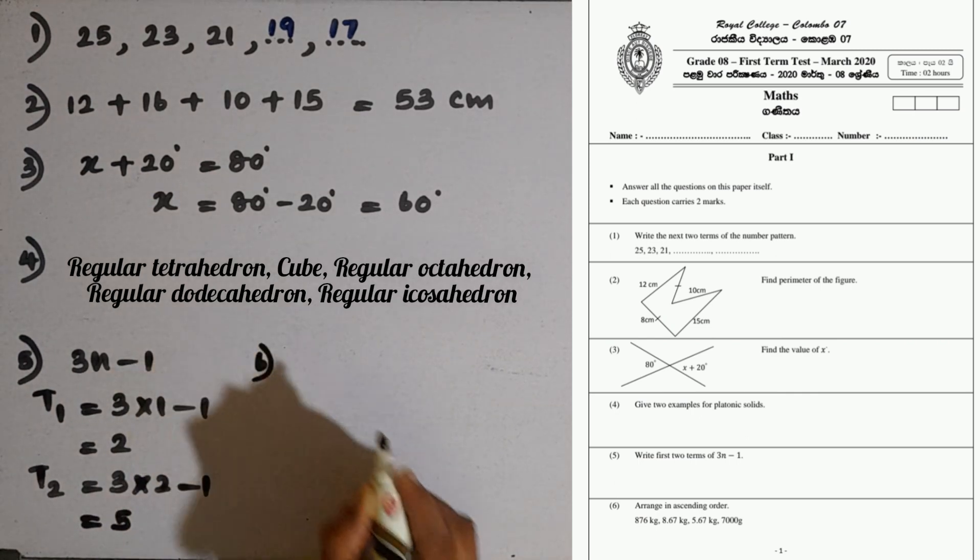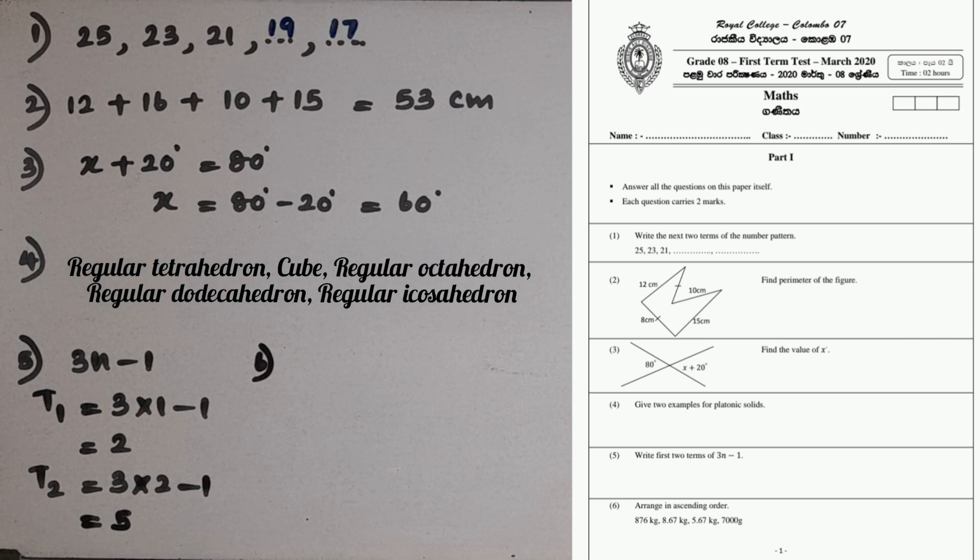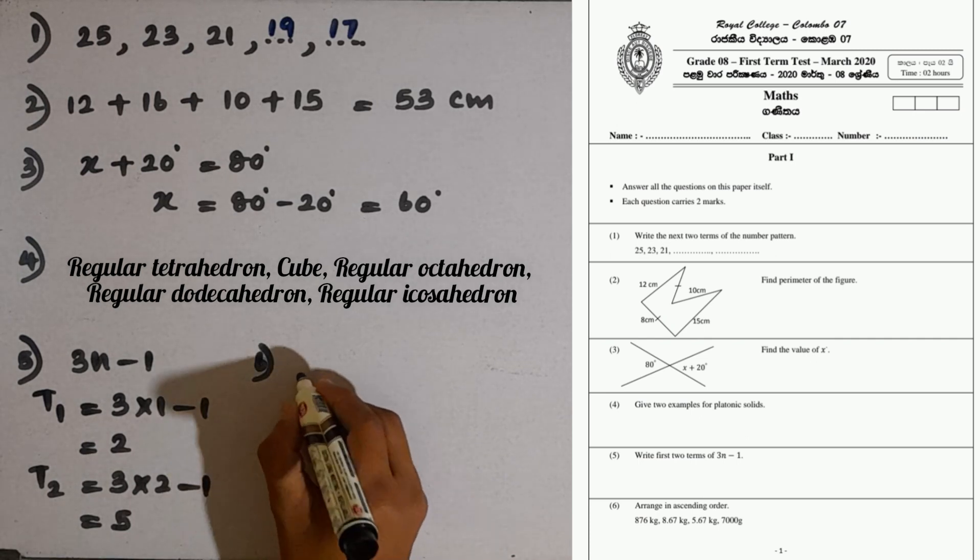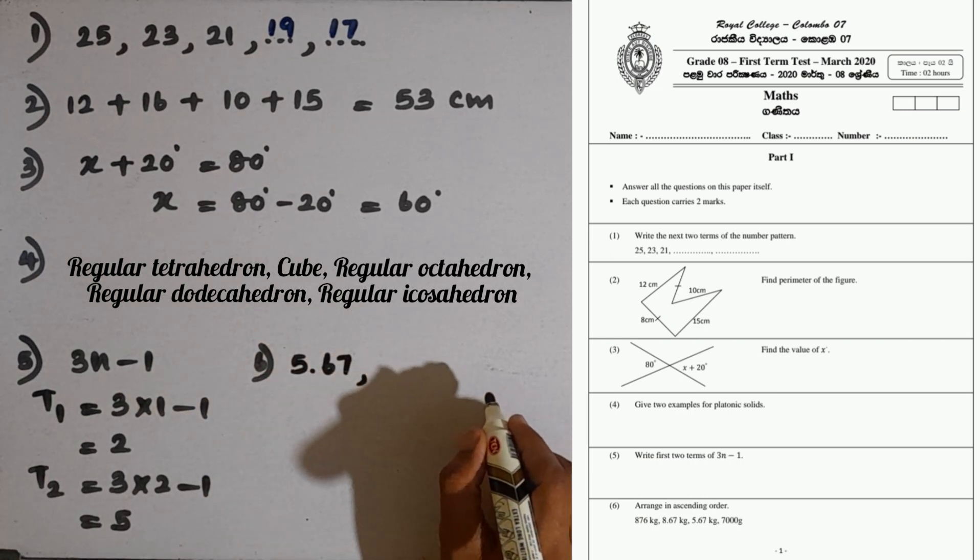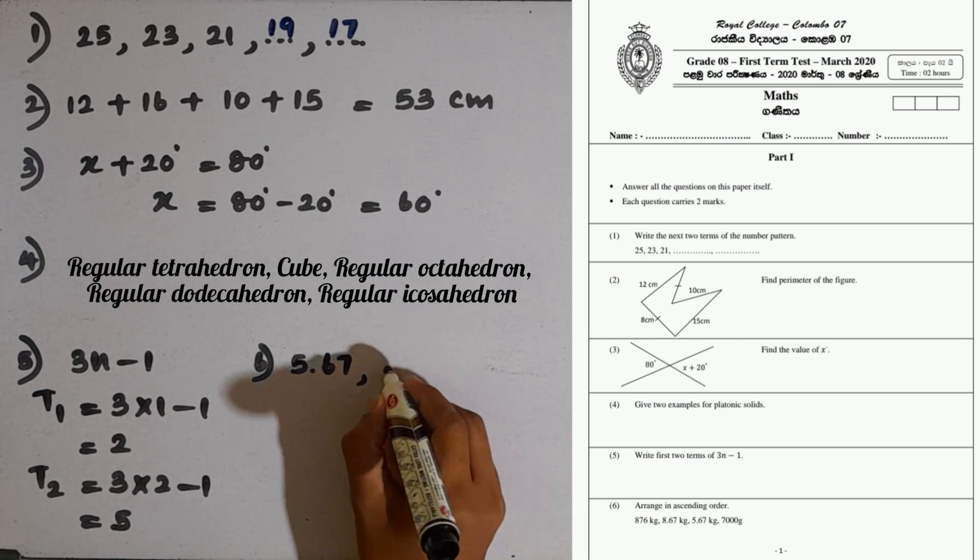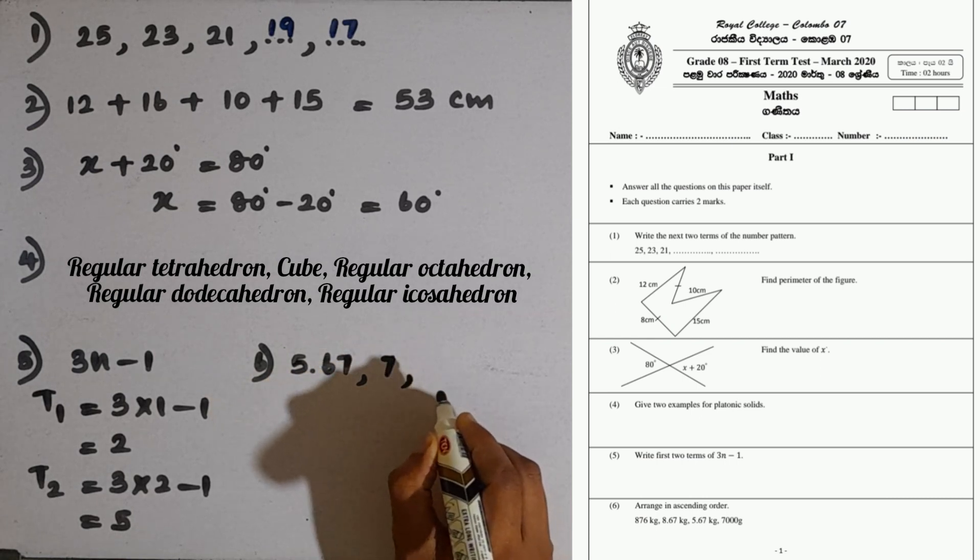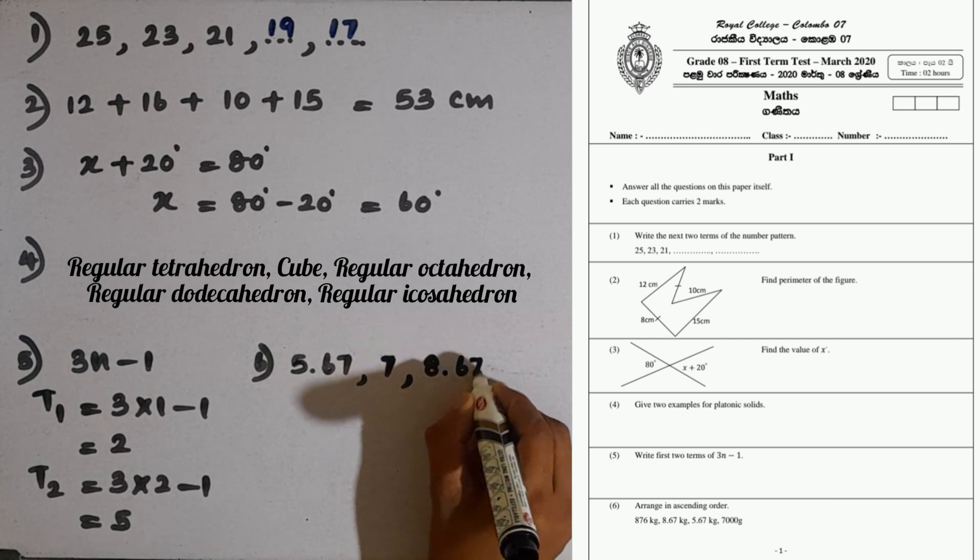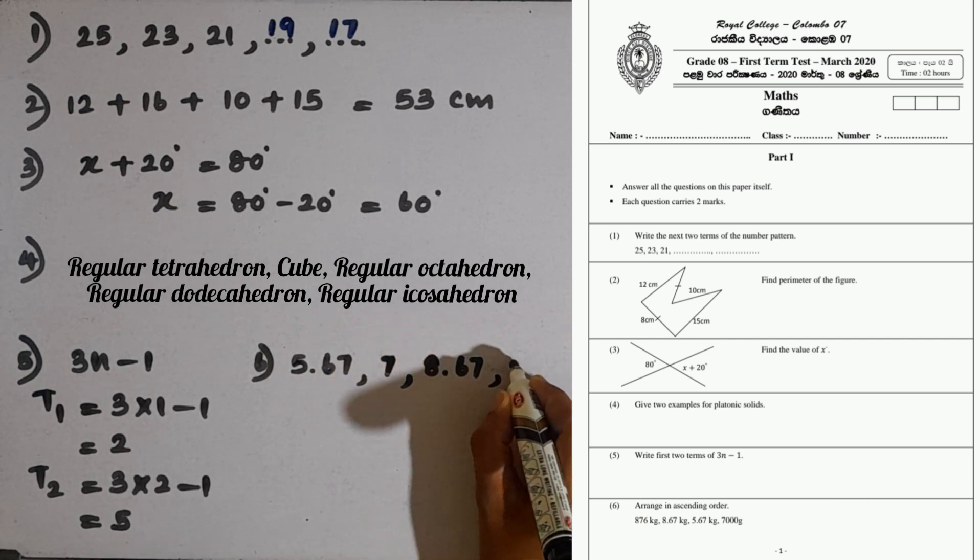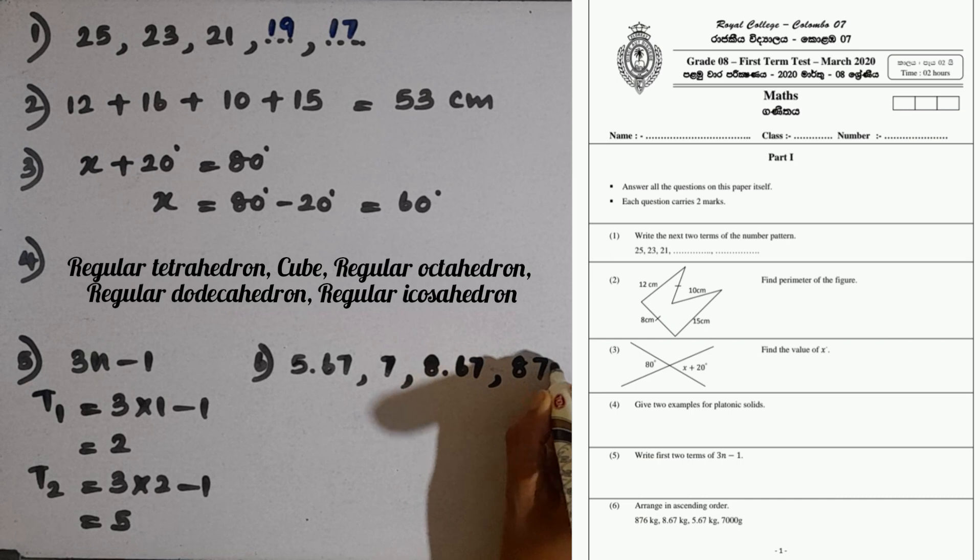Question number 6: arrange in ascending order. Ascending order means smallest one to the largest one. What is the smallest one here? 5.67 kilograms. Then 700 grams equal to 0.7 kilograms, we can write that. Then 8.67 kilograms, then 876 kilograms.